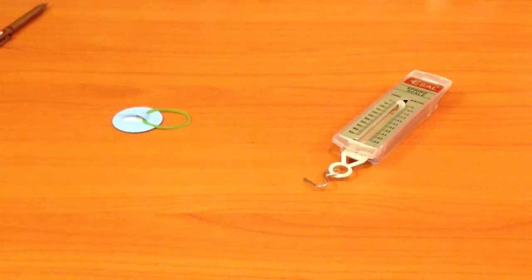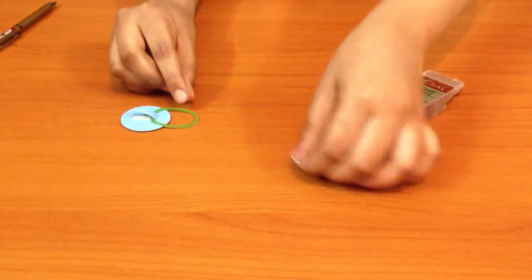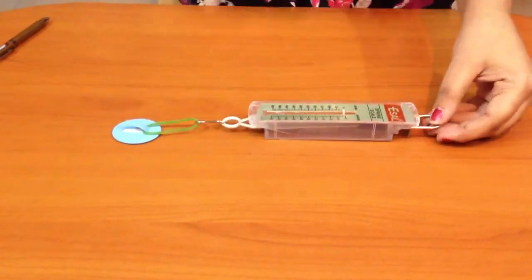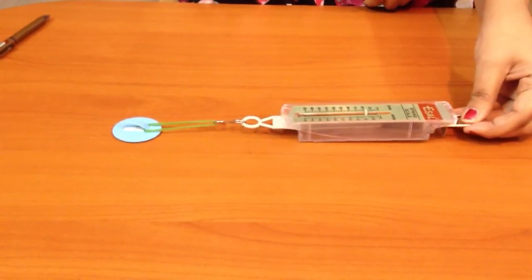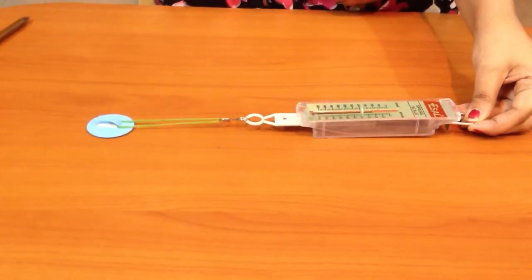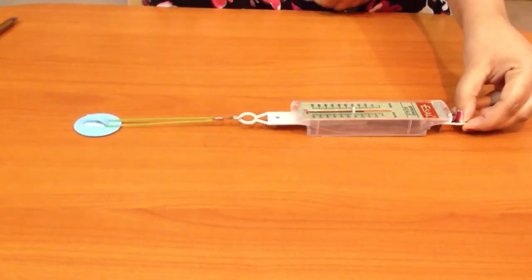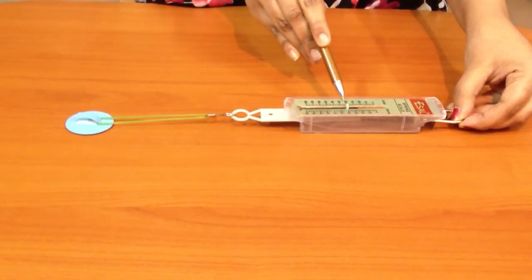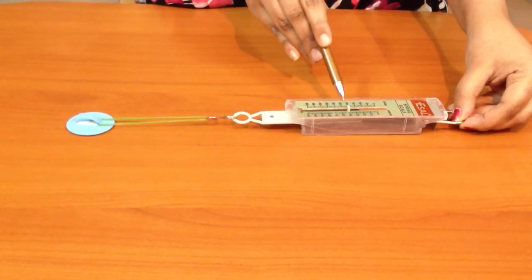Put a rubber band in the hook of the spring balance. Slowly pull the spring balance. It reads 200 grams or 2 Newtons.